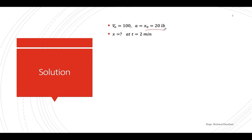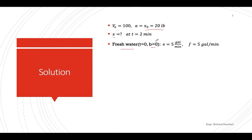The initial volume of the brine solution is 100 gallons and it contains 20 pounds of salt — that is X-sub-O. We are asked to find x, the amount of salt, in the brine solution after 2 minutes, when t equals 2. Since fresh water is poured into the tank, there is no concentration of salt, so B equals zero. The rate in and rate out are both 5 gallons per minute.